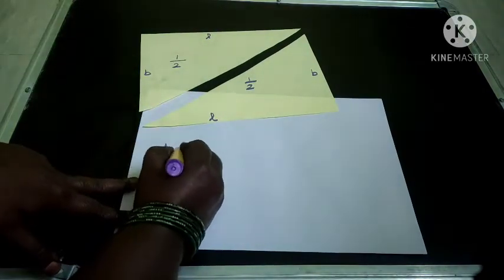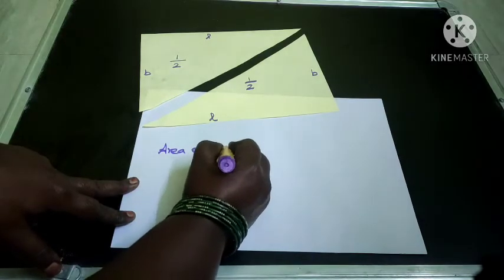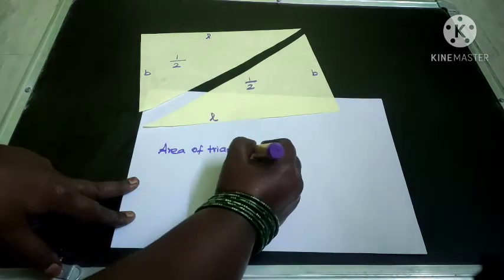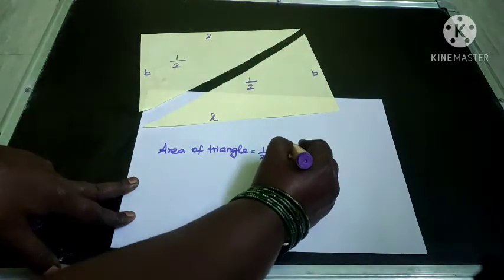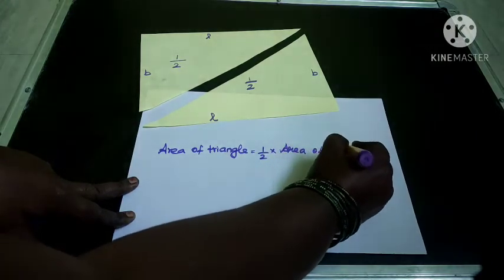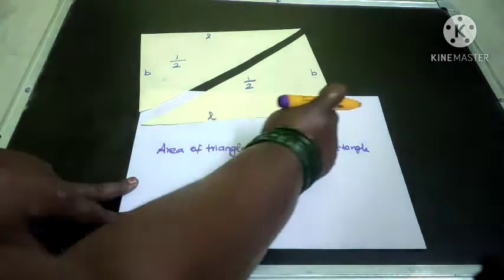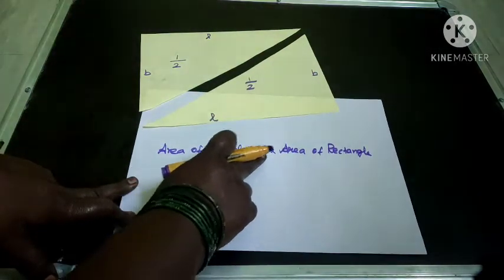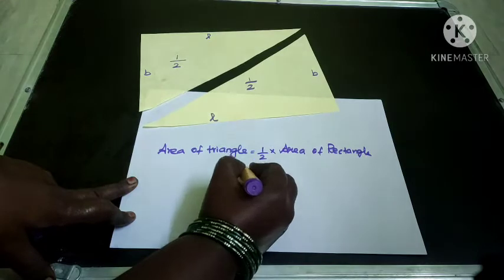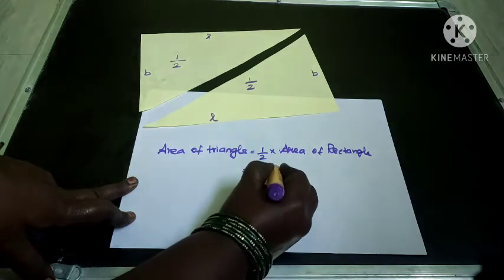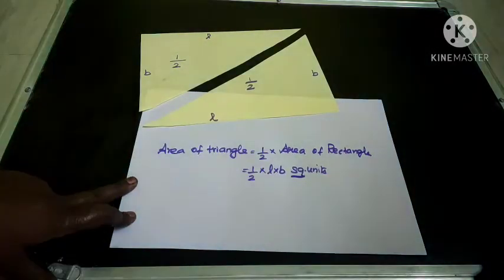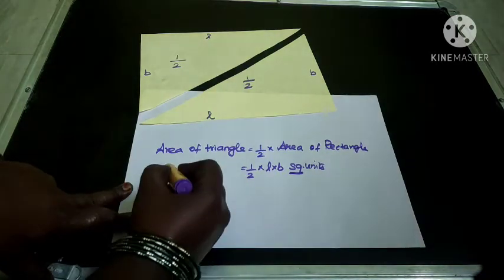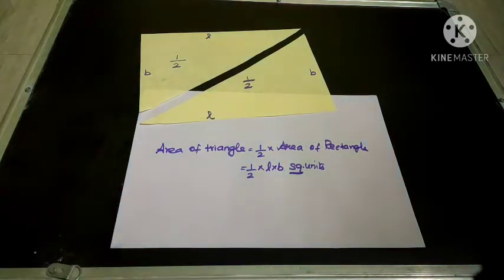Area of a triangle — if we take this triangle, it is half of the area of the rectangle. So from the rectangle only we got this triangle. Area of triangle is equal to half into area of a rectangle. Area of a rectangle is L into B square units. So this is the formula to find the area of a triangle. Now let us see how to apply this formula.